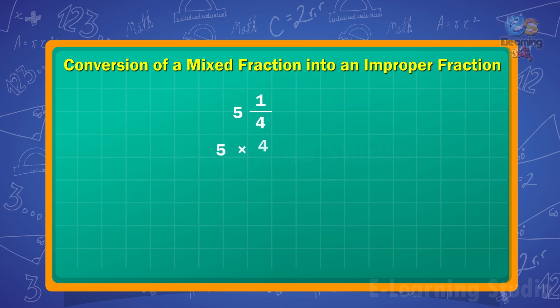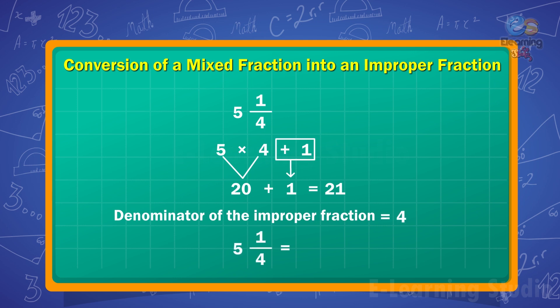first we multiply the denominator of the proper fraction to the whole number attached with it, and then we add the numerator. And now, denominator of the improper fraction is equal to 4. So 5 and 1 upon 4 is equal to 21 upon 4.